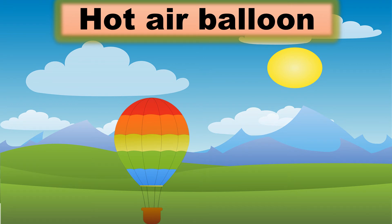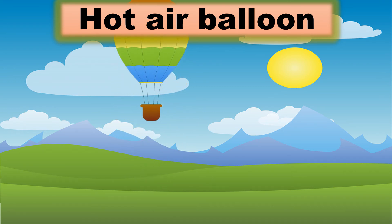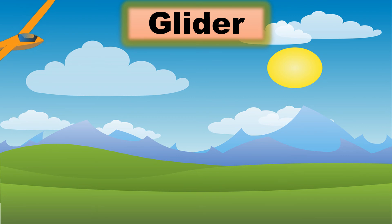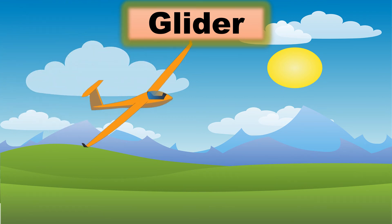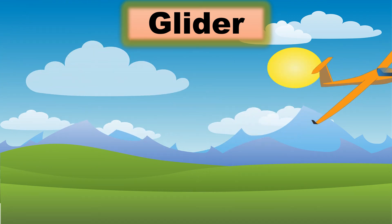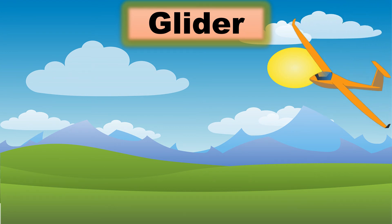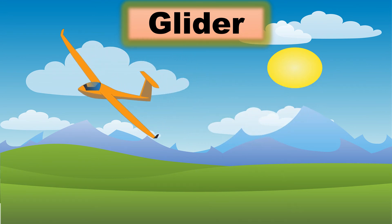Hot air balloon. The hot air balloon was the first successful human-carrying flight technology. It is usually used for leisure. Glider. A glider is an aircraft that soars through the air without the help of a motor. Some gliders look very much like aeroplanes. It is used for air sports such as gliding, hang gliding, paragliding, etc.